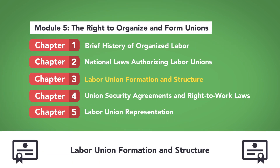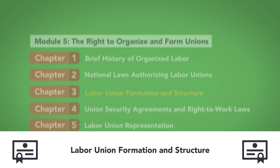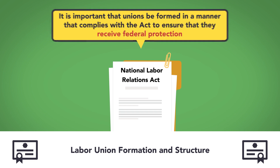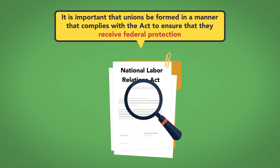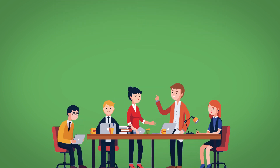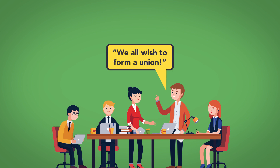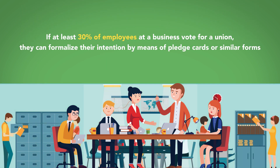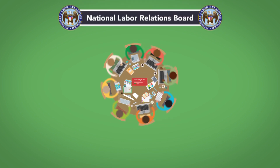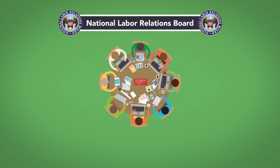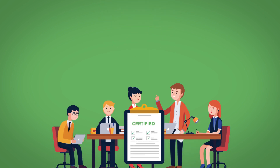Labor Union Formation. The NLRA provides instructions for the formation of protected labor unions. It is important that unions be formed in a manner that complies with the act to ensure that they receive federal protection. Unions are formed by a process that begins with a formal expression by employees that they wish to form a union. If at least 30% of employees at a business vote for a union, they can formalize their intention by means of pledge cards or similar forms. The cards are collected and submitted to the National Labor Relations Board, which then conducts an election. If a majority of the workers who vote in the election choose union representation, the NLRB will certify the union as a collective bargaining agent.